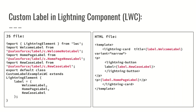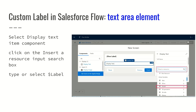To use custom labels in Lightning Web Components (LWC), you import the labels just as you would import Apex class methods, then use them with the LightningElement. You pass all the custom labels you want to use, and in the template file you reference them as label.customLabelName — for example, welcomeLabel, newCaseLabel, and homePageLabel.